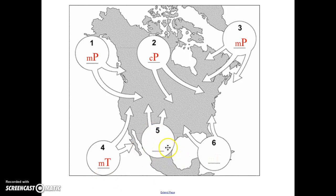Air mass number five is forming over Mexico. So it will be dry and warm, continental tropical.